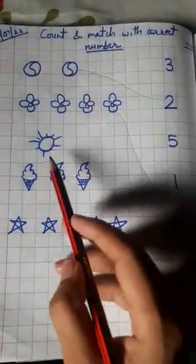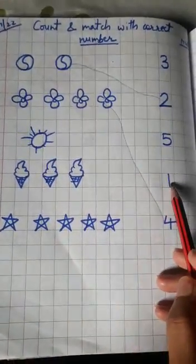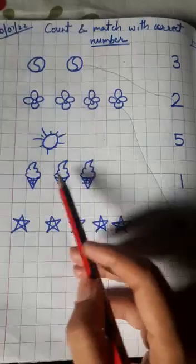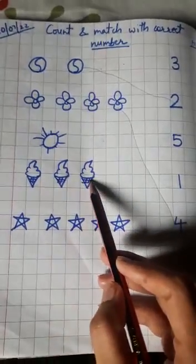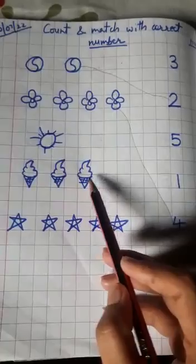So you have to match it with number one. Next is ice cream. One, two, three - three ice creams.